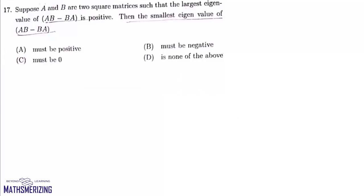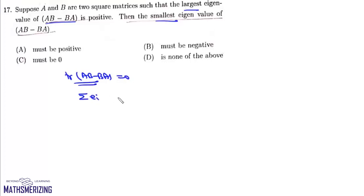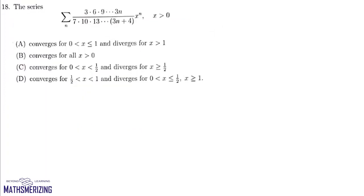Question 17: suppose A and B are square matrices such that the largest eigenvalue of AB minus BA is positive. We know trace of AB minus BA equals 0, and trace equals sum of all eigenvalues. So sum of all eigenvalues is zero. Since the largest eigenvalue is positive, to make the sum zero, the smallest eigenvalue must be negative. Therefore the smallest eigenvalue of AB minus BA is negative, and that's option B.